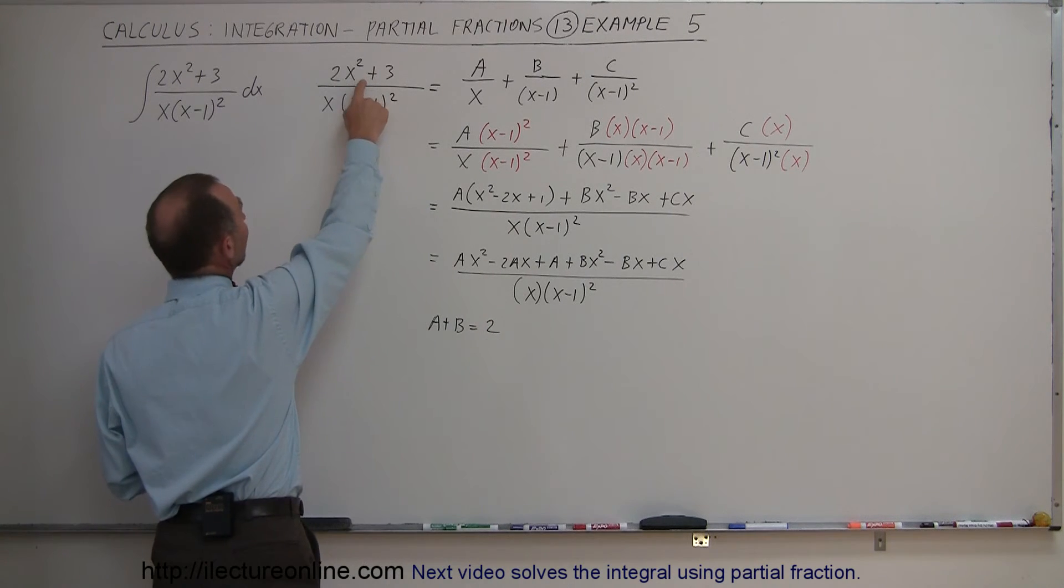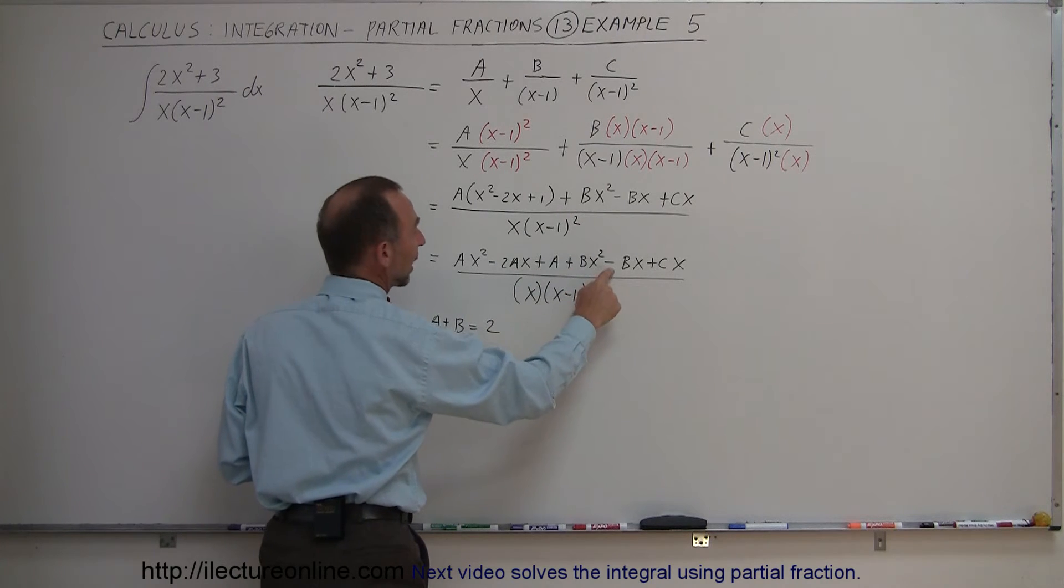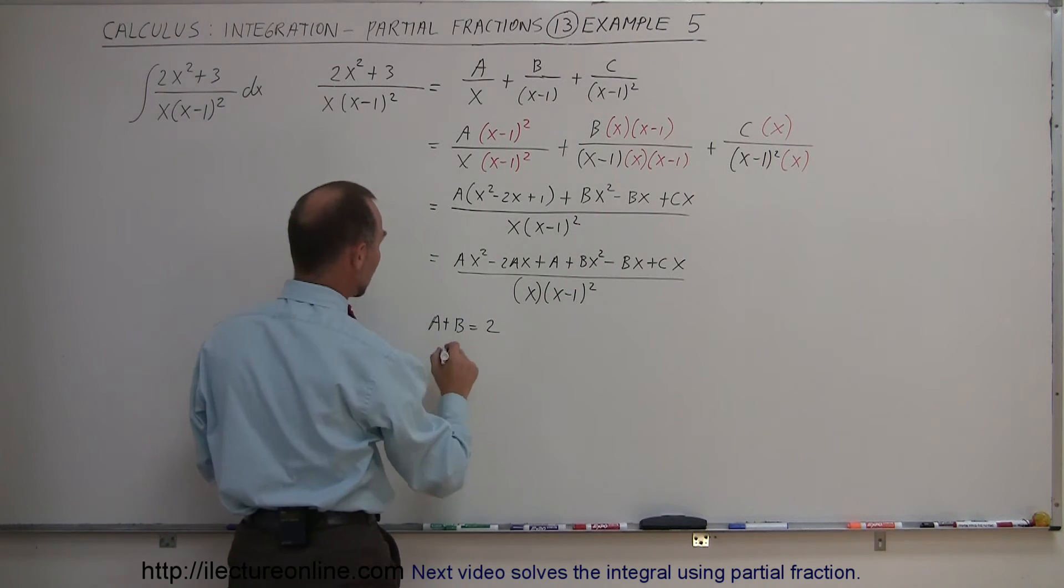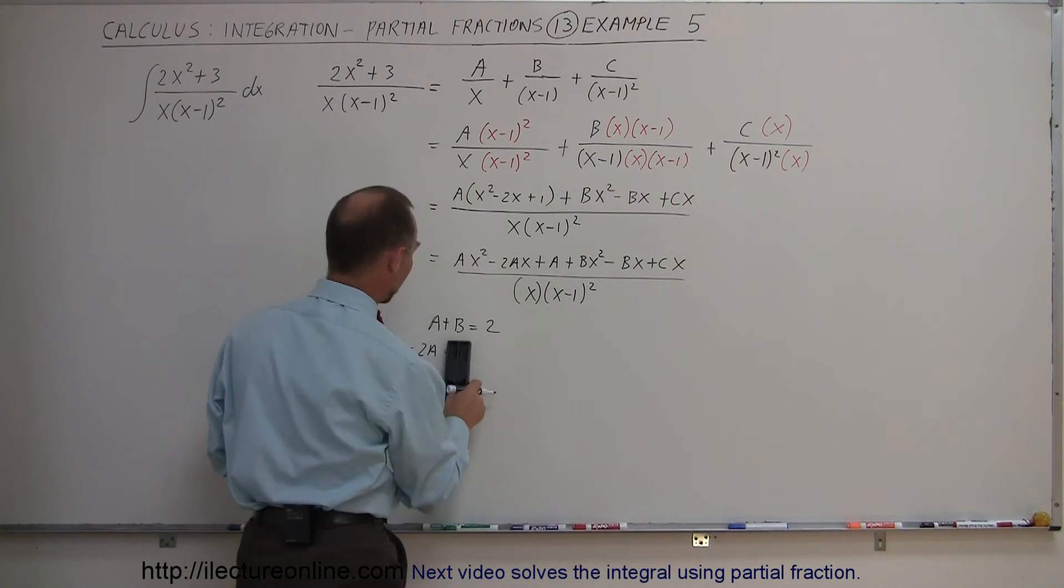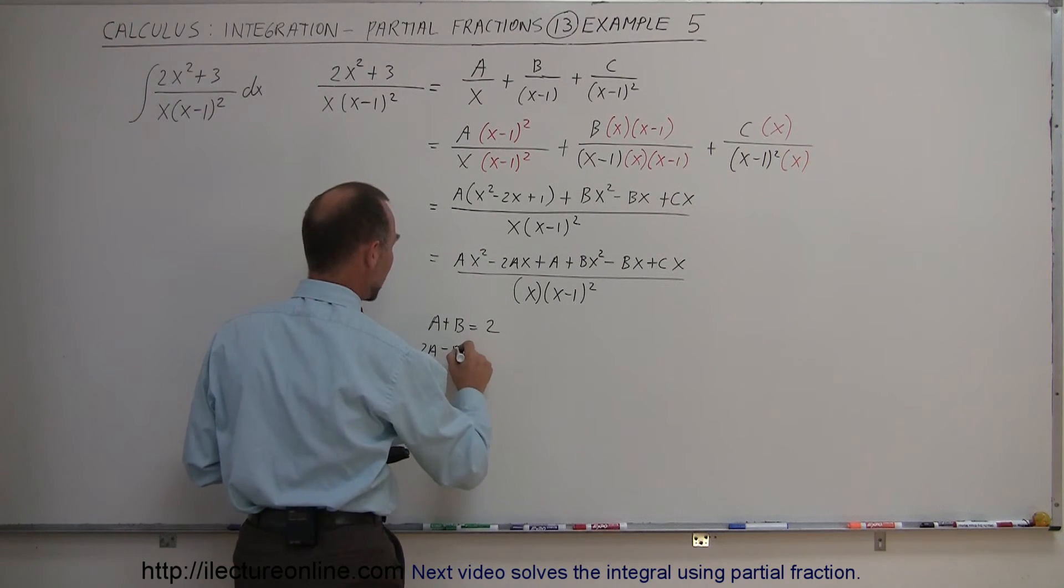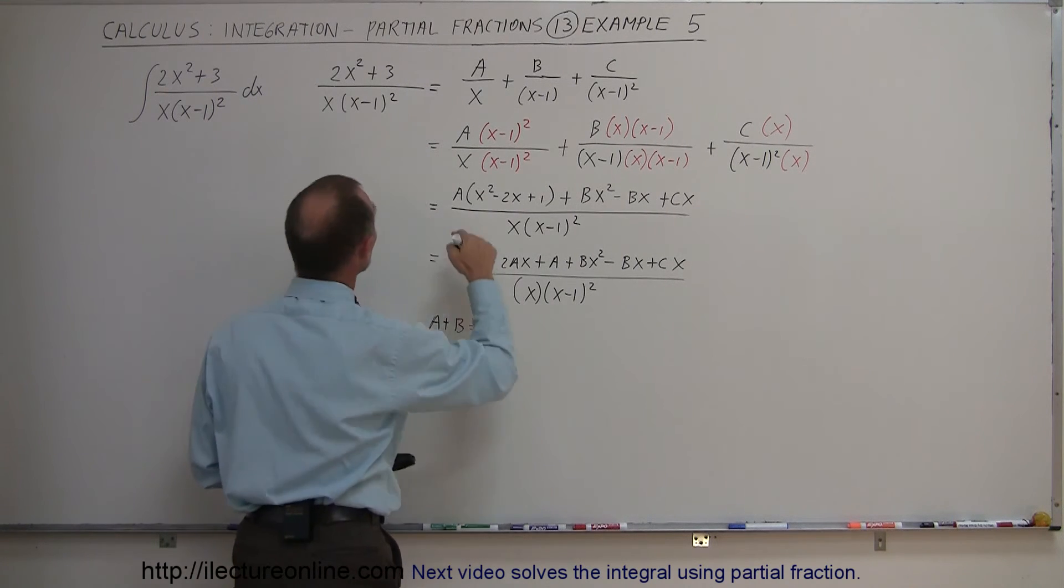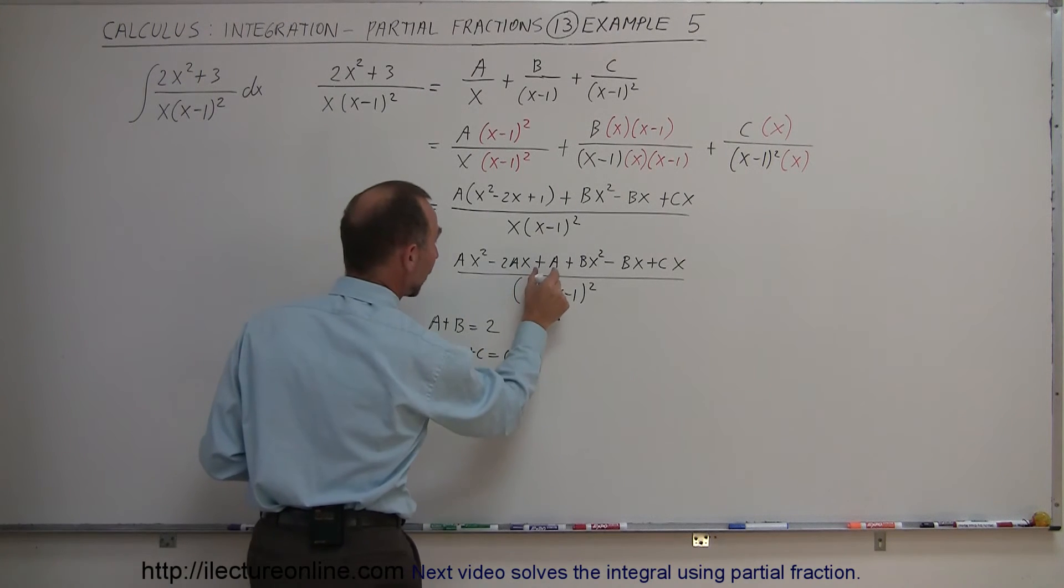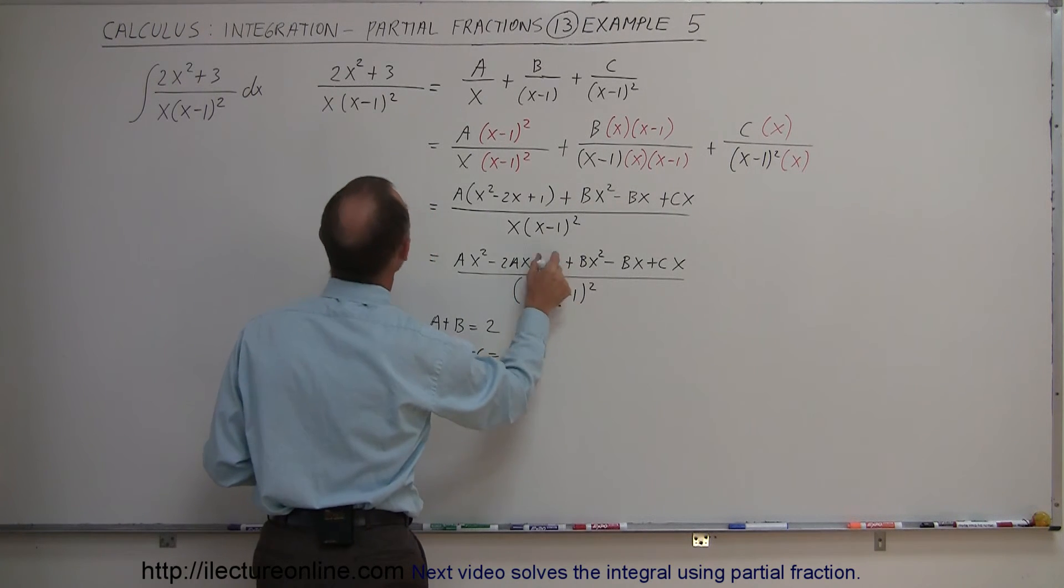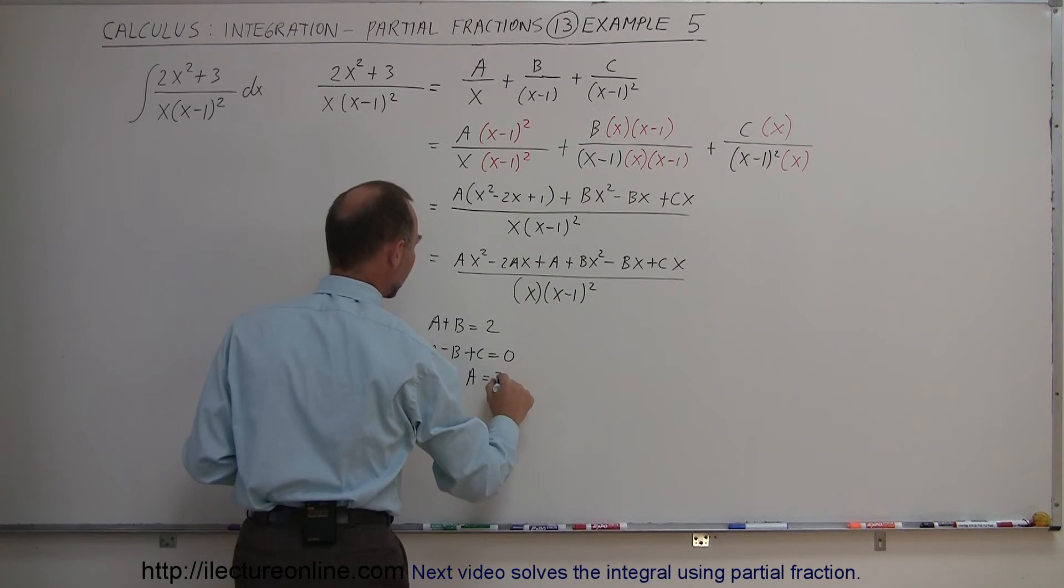Notice we don't have an x to the first term right here but we do have a minus 2Ax, we have a minus Bx and we have a plus Cx which means that minus 2A minus B plus C must equal 0 because again there's no x term in the numerator there. And finally the constant, we have one constant right here which is A and we have a constant right there which is 3 so that means that A equals 3.